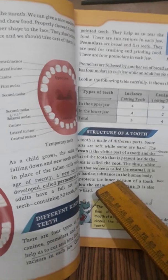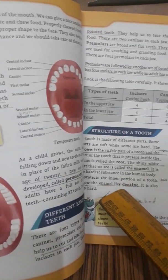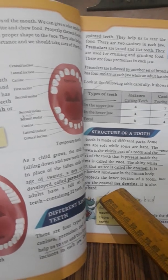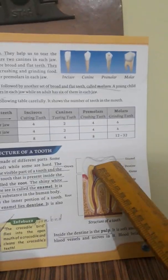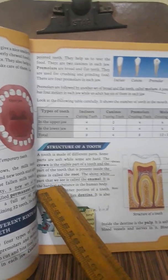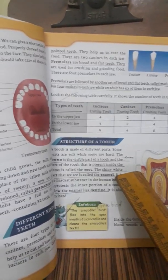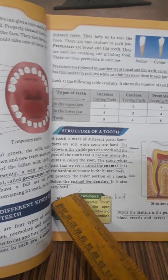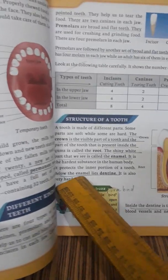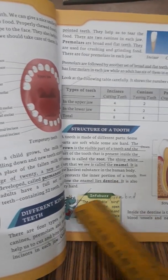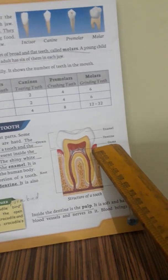The hard outer layer of the crown is called the enamel. It is the hardest substance in the body and protects the inner portion of the tooth. You can see the enamel in the diagram. Below the enamel lies the dentine, which is also very hard in nature.